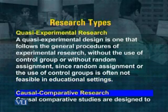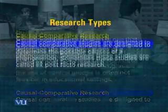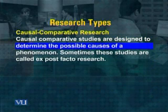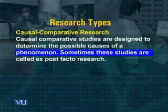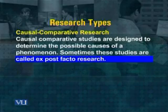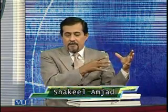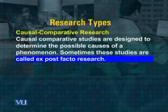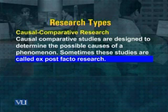Then we have causal comparative research. As is very clear from the name, causal comparative studies are designed to determine the possible causes of a phenomenon. Sometimes these studies are called exposed factor research. For example, you take two groups of people — one is promoted and one is not promoted — and you try to determine what difference has taken place. Causal comparative research can be very helpful in understanding the working of managers or the workforce at the workplace. Causal comparative research always compares two things with different variables.